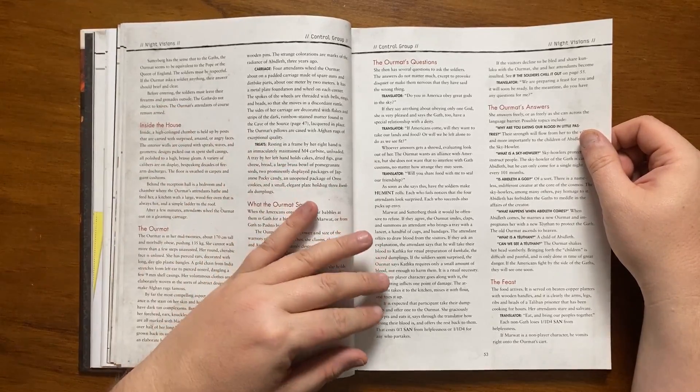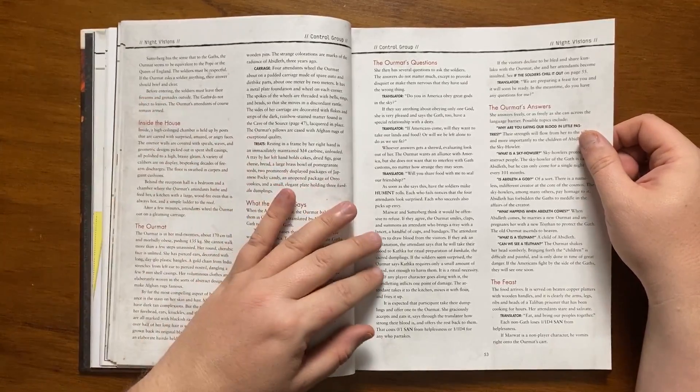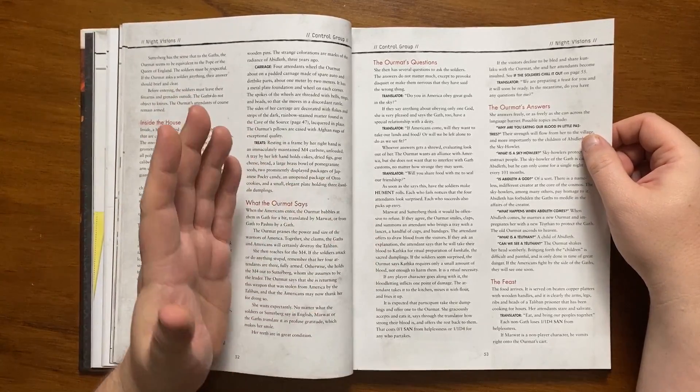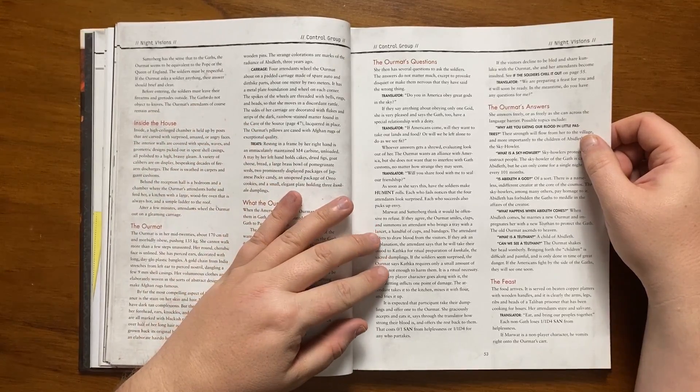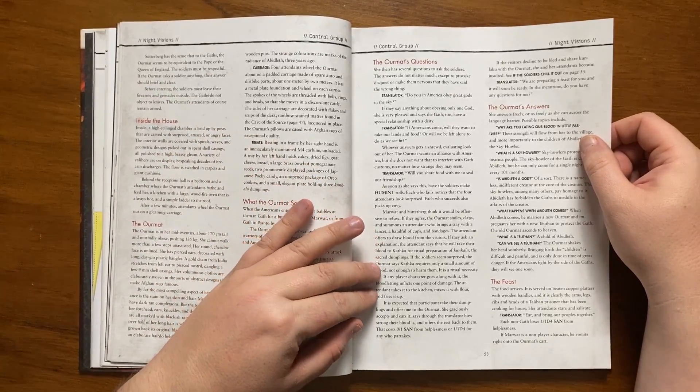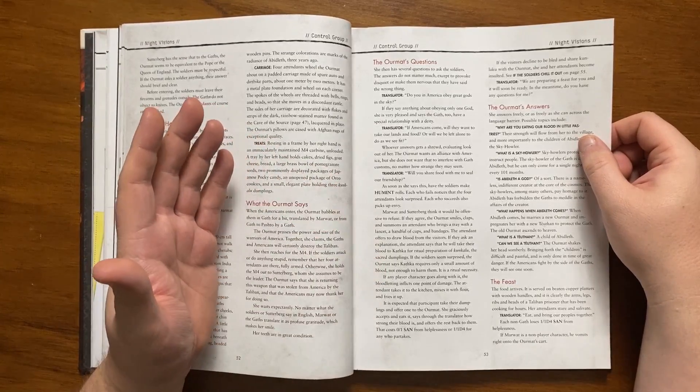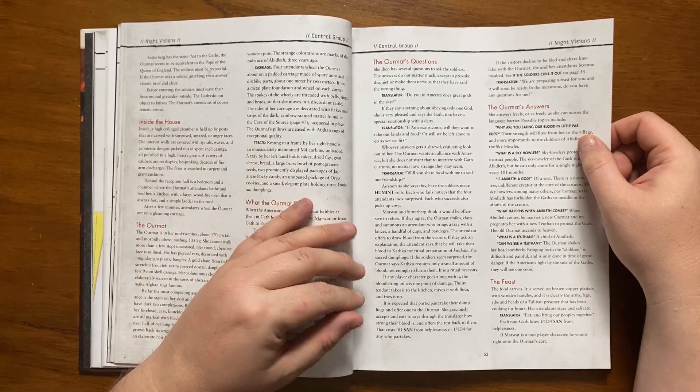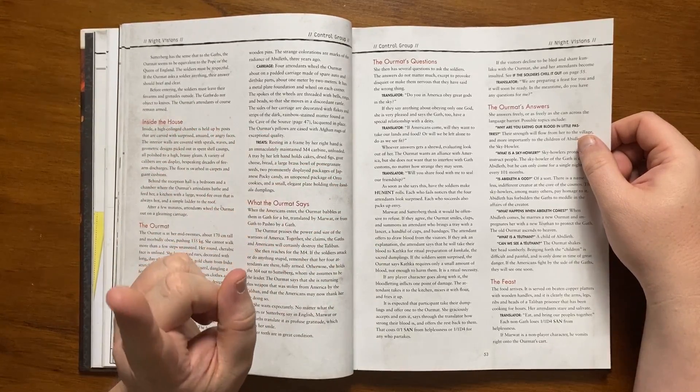If they decline to eat one the Ormat will be offended though if they are calm about it they will be told that a feast is being prepared for them. The Ormat will then proceed to answer any questions that the visitors will have for her. If asked why they are eating their blood she will explain that their strength will flow into the village and the children of Abdaleth the sky howler. If asked what a sky howler is she will say that they protect and instruct the Gath. If asked if Abdaleth is a god she will reply that Abdaleth is of sorts and that there is a nameless and different creator to the cosmos that Abdaleth pays homage to. If asked what happens when Abdaleth comes she will say that he marries a new Ormat and impregnate her with new Tuathan to protect the Gath and the old Ormat ascends to heaven. If asked if they can see a Tuathan they will be told that bringing them forward is difficult and painful and only done so in times of great danger but that if the Americans fight the Gath they will see one soon enough.